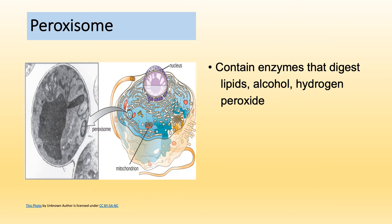Peroxisomes are another type of small membrane-bound vesicle containing different enzymes than lysosomes. They specialize in digesting lipids, alcohol, and some toxic materials such as hydrogen peroxide. In the cell, high concentrations of hydrogen peroxide — which is very toxic — are detoxified by peroxisomes. The liver is an organ with lots of peroxisomes. If a person drinks too much alcohol, the peroxisomes become overworked and exhausted, and when they can no longer digest the alcohol, it damages liver cells, eventually causing the disease we call cirrhosis.